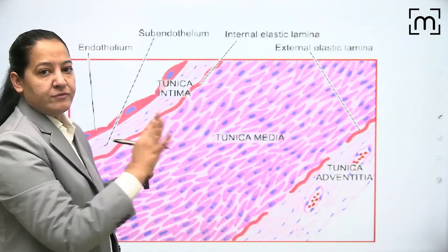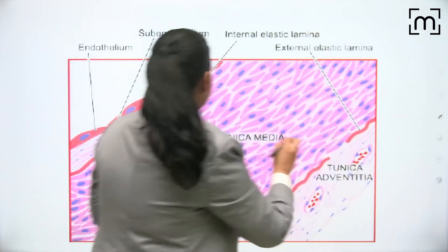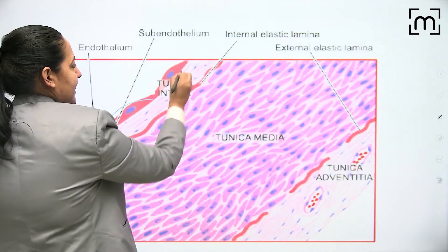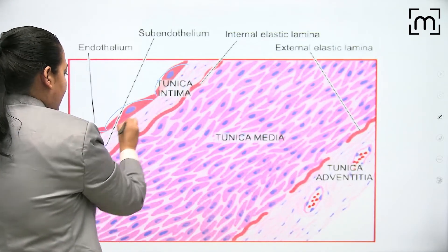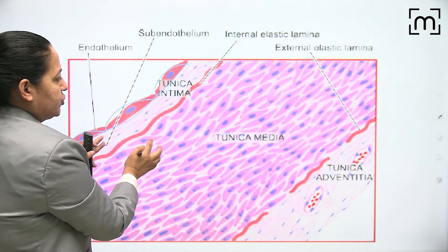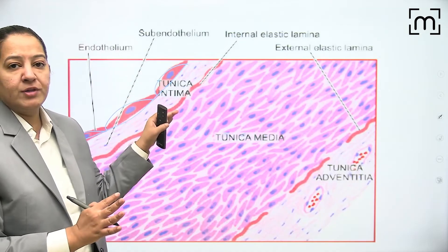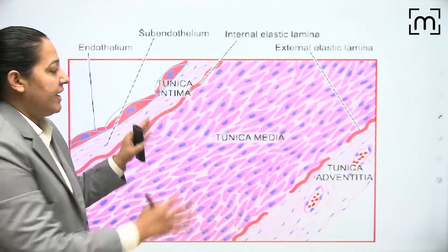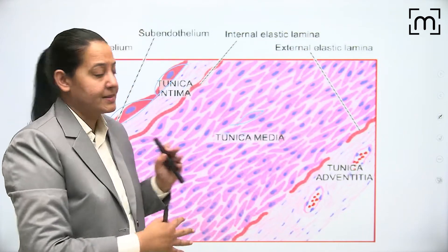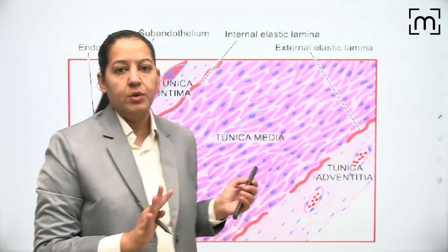This is the cross-section diagram of the three layers of the blood vessel wall. Intima is made up of endothelial cells, and just below the endothelial cells there is sub-endothelium tissue which has connective tissue. Endothelium and sub-endothelium together constitute intima. In the media there are smooth muscle cells, and in the adventitia there is connective tissue.